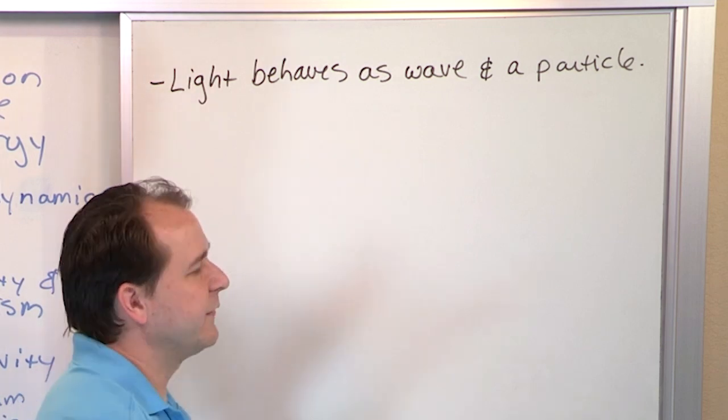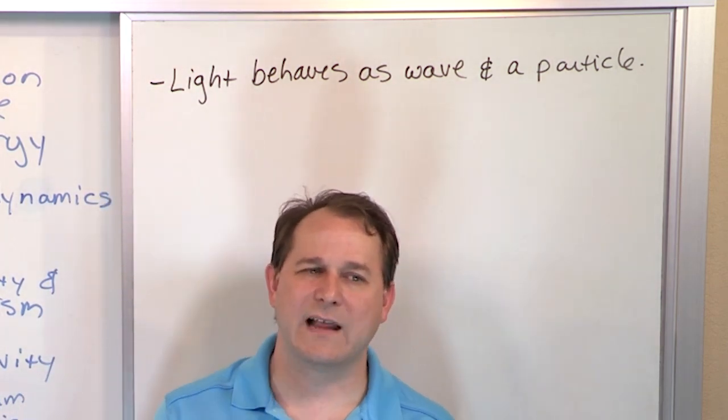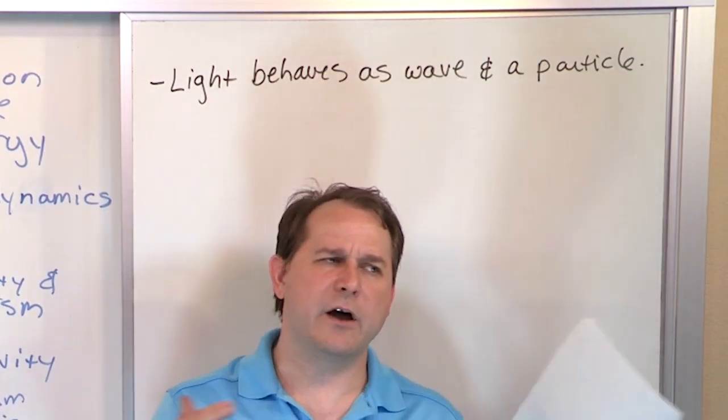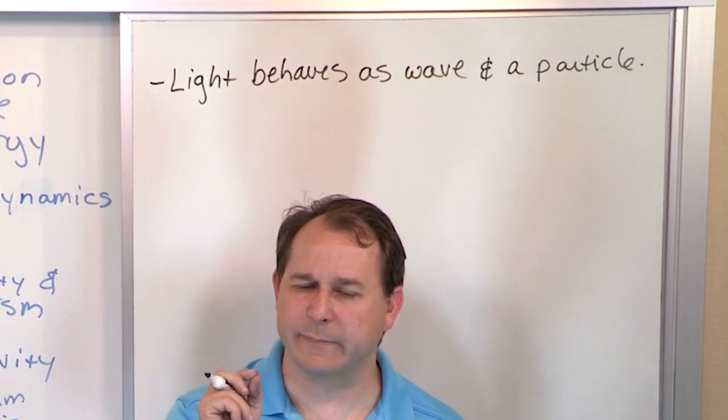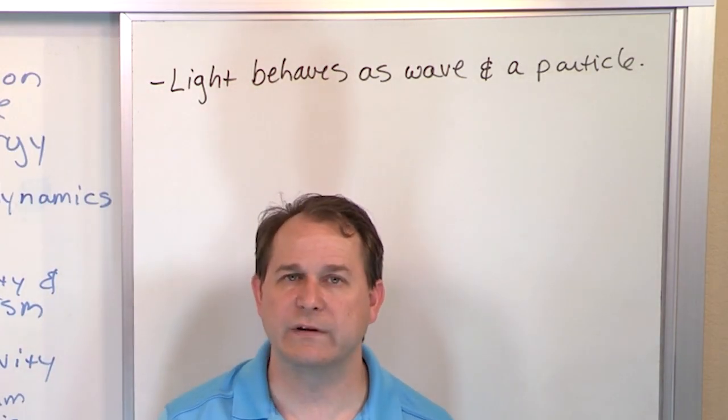The particle is called a photon. So I know you've heard the term photon, photon of light. Well in some experiments, light can behave like a wave, and we'll get into the details later. But in other experiments, it behaves very much like a particle, like a discrete object called a photon.